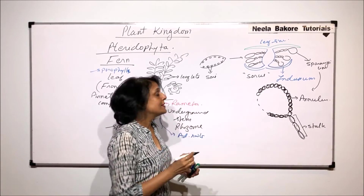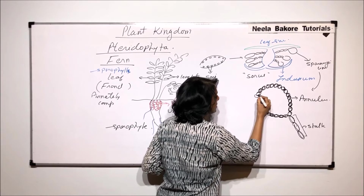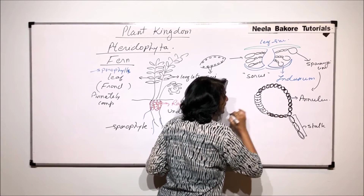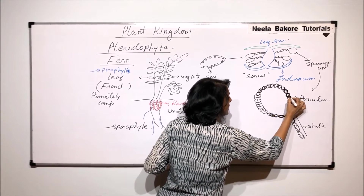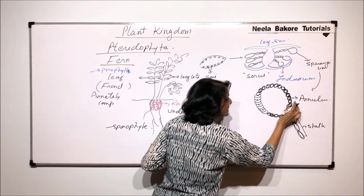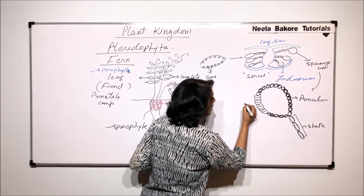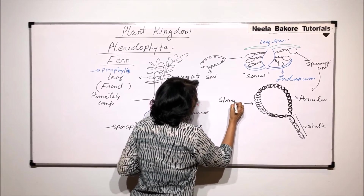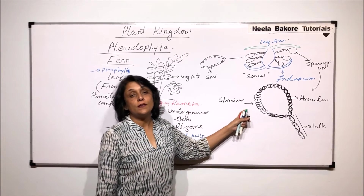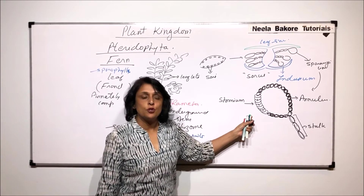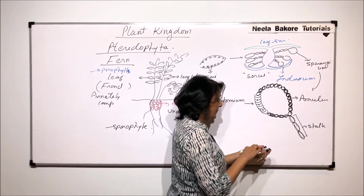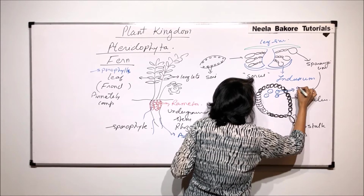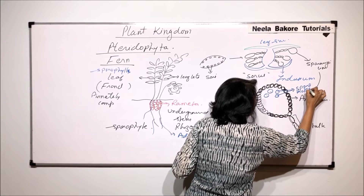There are also a few cells which are thin-walled compared to the annulus cells. These are slightly elongated, thin-walled cells. We can differentiate between the thick-walled annulus cells and these thin-walled cells. The small area where thin-walled cells are present is known as the stomium — this is the place from where the sporangium is going to rupture. Inside the sporangium, spore mother cells are present.